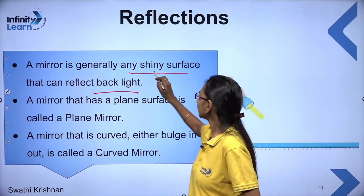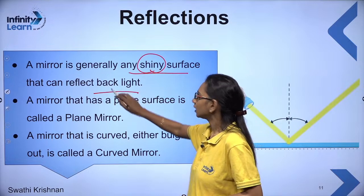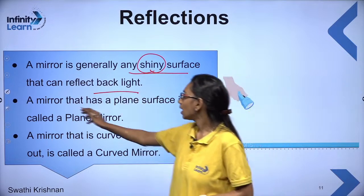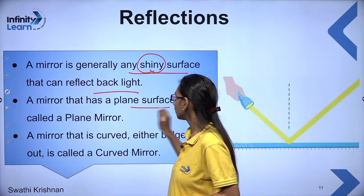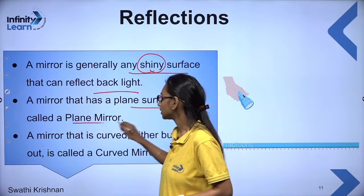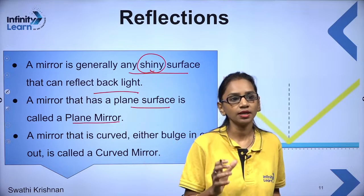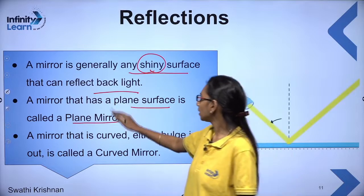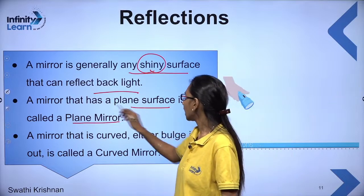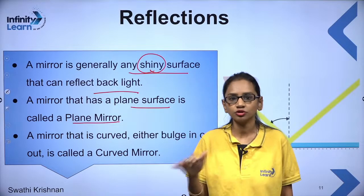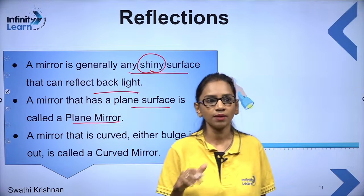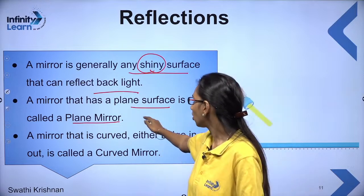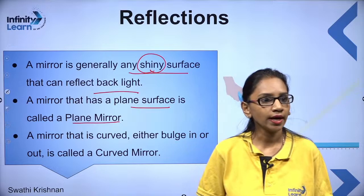Mirror is generally a shiny surface which helps reflection of light. A mirror with a plain surface is called a plane mirror — any mirror with a plain surface will be called a plane mirror. We have two types of mirrors: one is the plane mirror with a plain surface, and we have curved mirrors where the surface is either curved or bulged out.